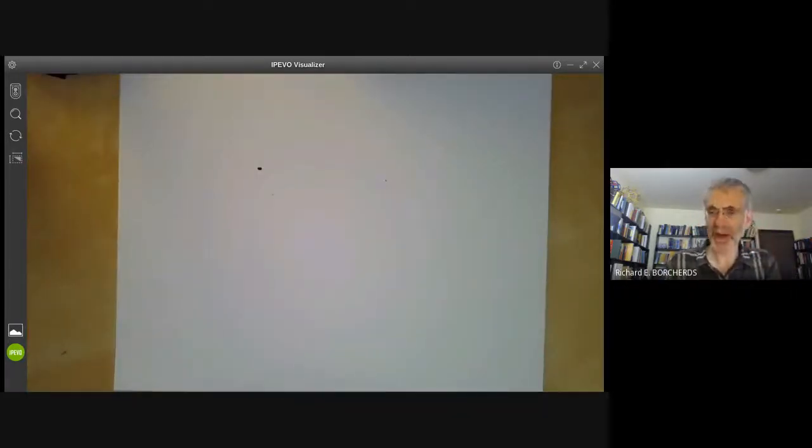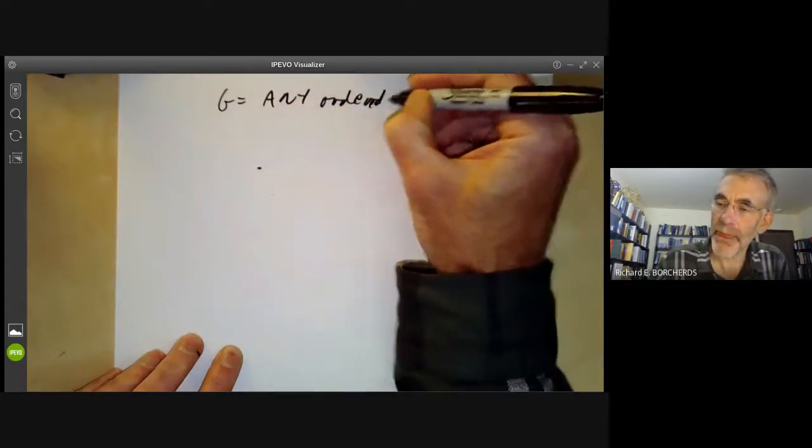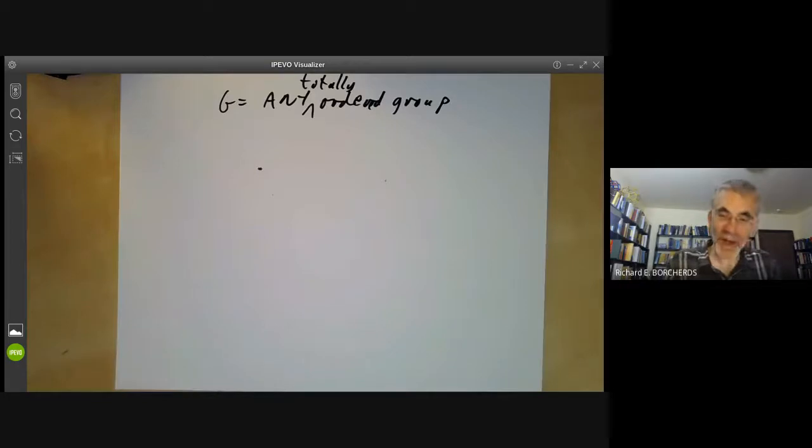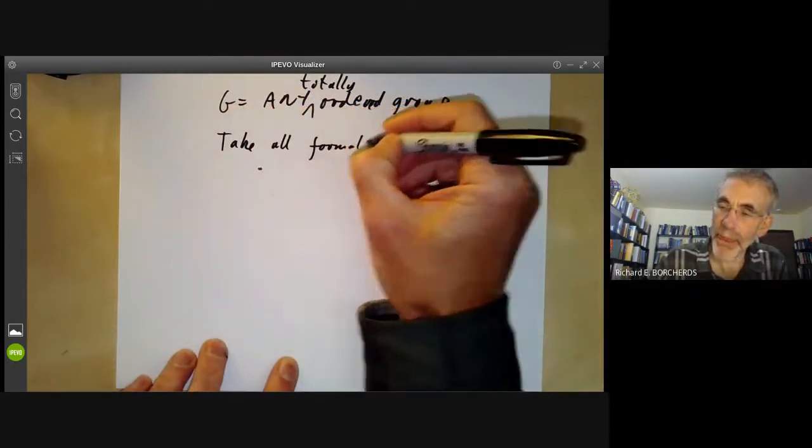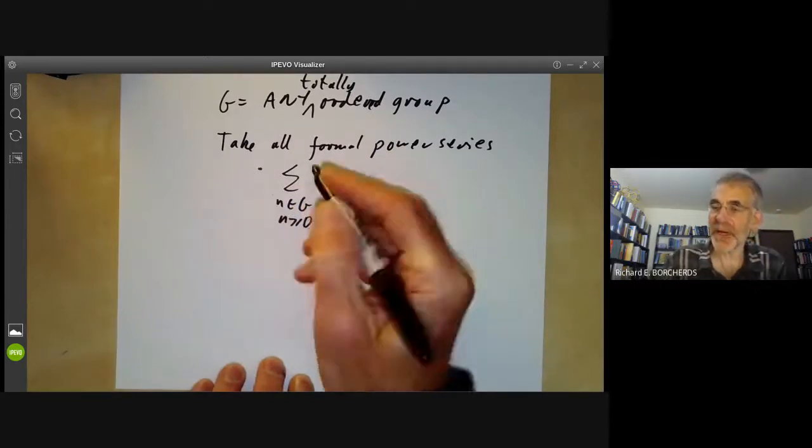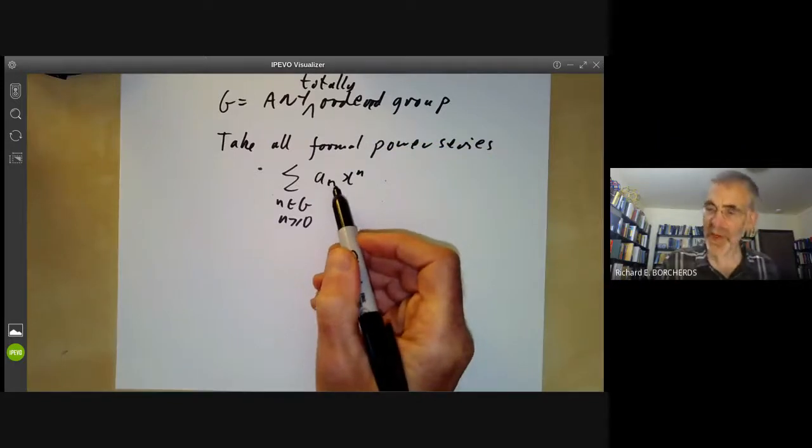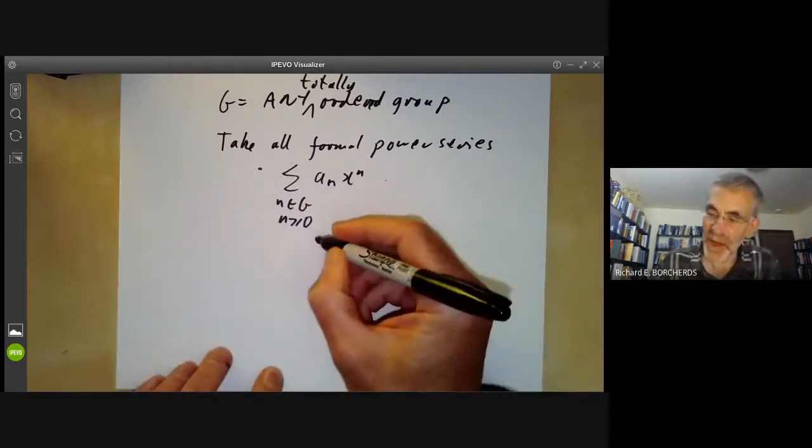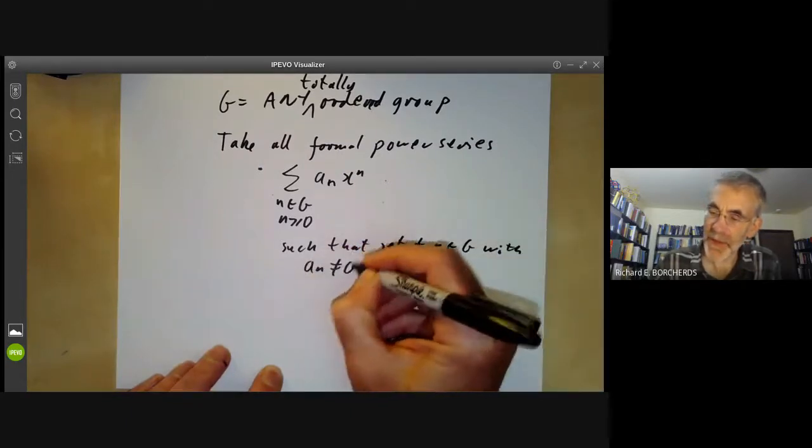So what does rank one mean? What we do is we take the value group G and we tensor it over the integers with the rational numbers Q. And the rank is then the dimension of this as a vector space over the rationals. So discrete valuation rings are certainly rank one valuation rings. And this gives an example of a rank one valuation ring that isn't a discrete valuation ring. What about valuation rings of higher rank? We can find lots of examples as follows. Let G be any ordered group, I guess I mean here a totally ordered group. Then we can form a valuation ring with value group G as follows. What we do is we take all formal power series of the form sum over N in G for N positive of A_N times X to the N. Well, you will immediately notice there's a problem with this. These don't form a ring because you can't really multiply them together. You just get infinite sums.